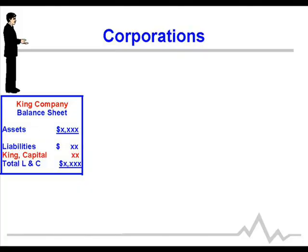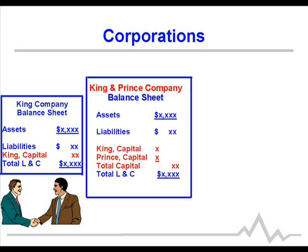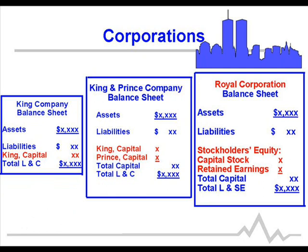One of the ways to see the differences between proprietorships, partnerships, and corporations is to look at the balance sheet — specifically the capital section. When we were a proprietorship, the balance sheet had one owner, one capital account. In chapter 12 as a partnership, we had two or more capital accounts, one for each partner. Corporations are distinctly different in how they report the capital section — the stockholders' equity section.